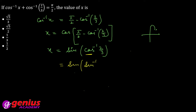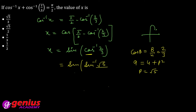cos θ = base/hypotenuse = 2/3, so base = 2, hypotenuse = 3. Perpendicular nikaalte hain using Pythagoras: 3² = 2² + p², so 9 − 4 = p², p = √5. Therefore sin θ = p/h = √5/3. Sin aur sin inverse cancel ho jaate hain, toh final answer x = √5/3.